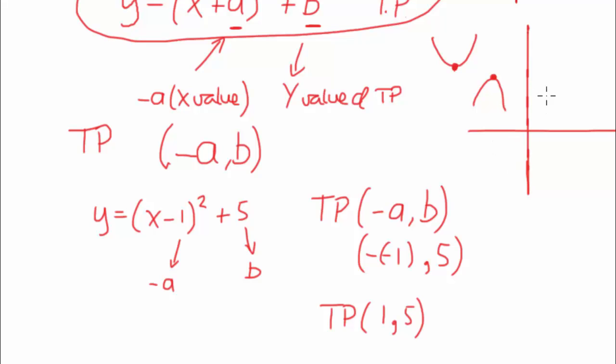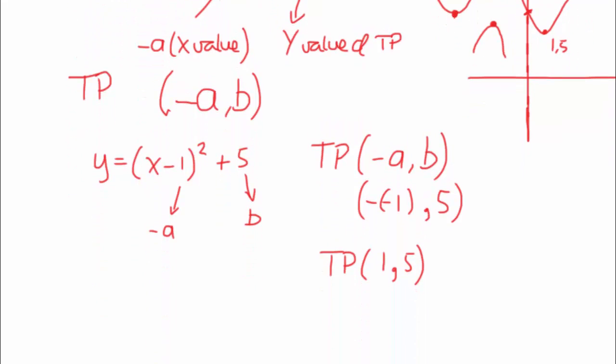You would have a graph that has a turning point of 1, 5. And it would look something like that. Obviously, we would need to work out where it cuts the x axis, and that's when you would make x equal 0. So you would make x equal 0, and if x equals 0, so that is 0 minus 1 squared plus 5, that equals minus 1 squared plus 5, which is equal to 6. So that's where it would actually cut the y axis at 6, and that's your turning point.